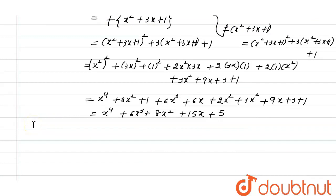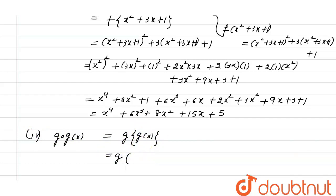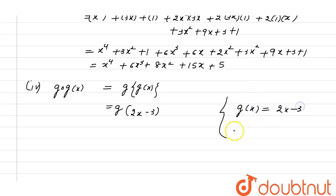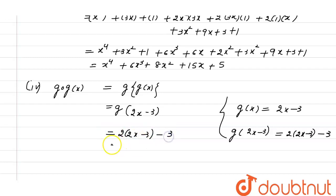Now we calculate the value of gog in the fourth case. gog of x equals g of g(x). The value of g(x) is 2x minus 3. So g of (2x minus 3) equals 2 into (2x minus 3) minus 3, which equals 4x minus 6 minus 3, which is equal to 4x minus 9. This is the final answer. Thank you.